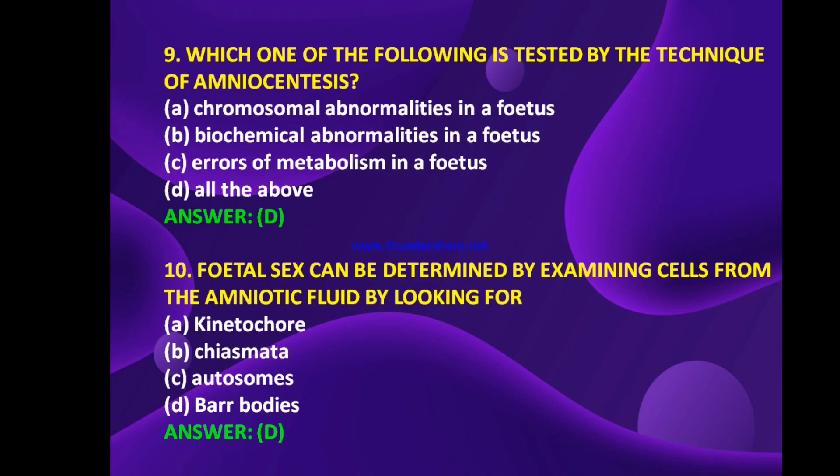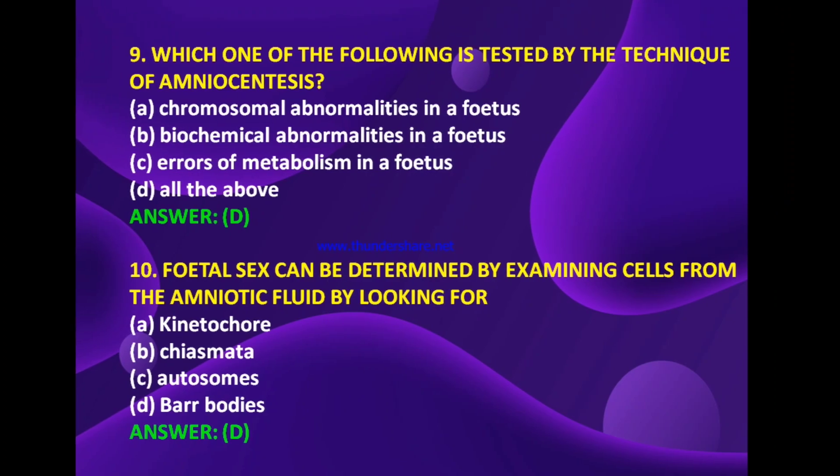Fetal sex can be determined by examining cells from the amniotic fluid by looking for kinetochore, chiasmata, autosomes, or Barr bodies. The answer is D — Barr bodies. Fetal sex can be determined by examining cells from the amniotic fluid by looking for Barr bodies.